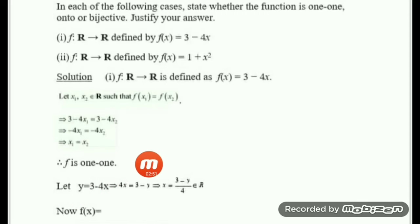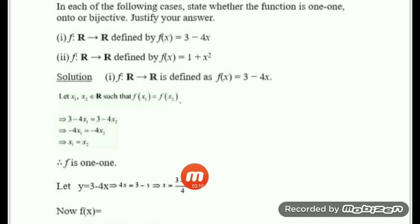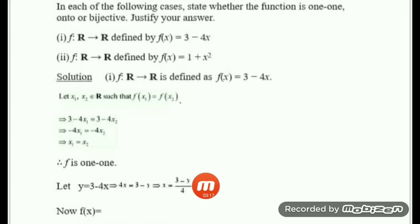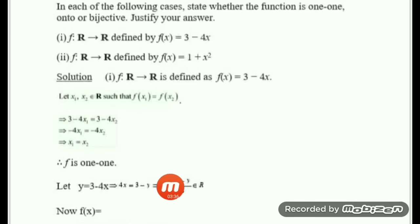We bring x to the left side and everything else to the right side, giving x = (3 minus y) divided by 4. Now we check whether (3 minus y)/4 is a real number. Since y is in codomain R, y is a real number, so 3 minus y is real, and dividing by 4 keeps it real. So x is a real number.